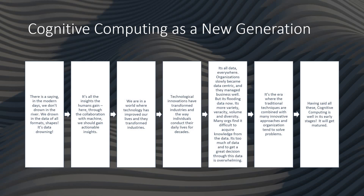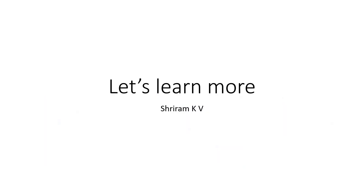Cognitive computing is still in its very early stages and will continue to evolve. It's more about getting better results and better insights. It's a combination of human and machine working together — it enables you to collaborate with machines in a better way. Cognitive computing can be very well seen as a new generation solution, and we are going to learn more about it in the next session. Thank you.